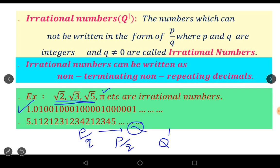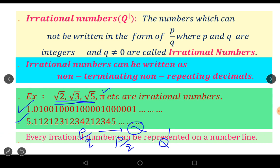Similarly, non-terminating, non-recurring decimals are also irrational numbers. Every irrational number can be represented on a number line.